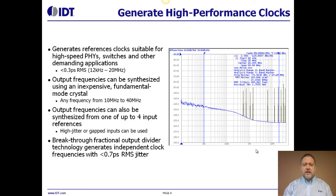One of the things we're particularly excited about with our third generation of the UFT family is a breakthrough fractional output divider technology that we're using within the device. A fractional output divider allows the output clock to be independent from the frequency of the PLL, and we can now do that with less than 0.7 picoseconds of RMS jitter, even in that very flexible mode of operation.